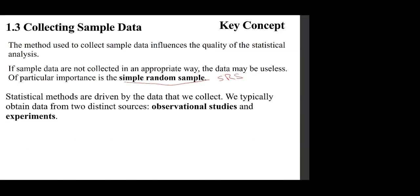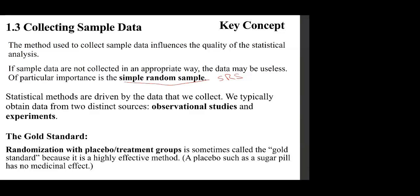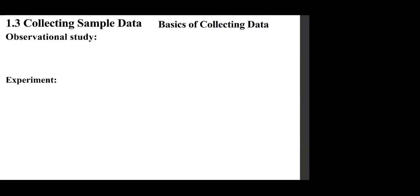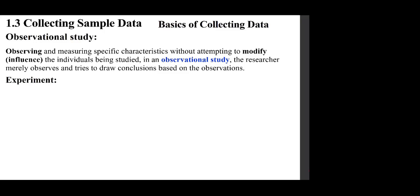Statistical methods are driven by the data we collect. We typically obtain data from two sources: observational studies or experiments. Randomization is considered the gold standard because it is highly effective. Observational study: observing and measuring specific characteristics without attempting to modify or influence the individuals being studied; the researcher merely observes and tries to draw conclusions.